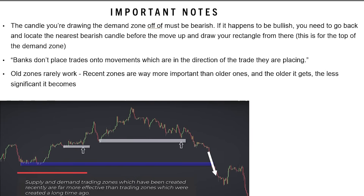The candle you're drawing the demand zone off of must be bearish. If it happens to be bullish, you need to go back and locate the nearest bearish candle before the move up and draw your rectangle from there — this is for the top of the demand zone. Part of the idea that this strategy is based on is order flow. The price comes back to a zone that it once left very quickly, and when it returns, hypothetically there are still leftover orders sitting in that zone that will drive the price out of there just like it did the first time.